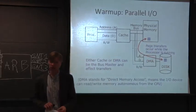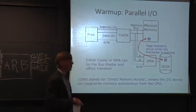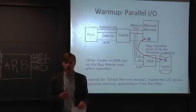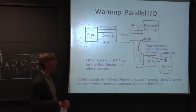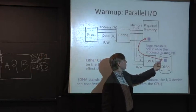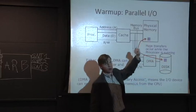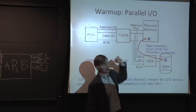So how does this come up with something like parallel? What problems can come up with something like parallel I/O? Well, let's say that the disk here wants to transfer a page from the disk to physical memory or to main memory while the processor is running.